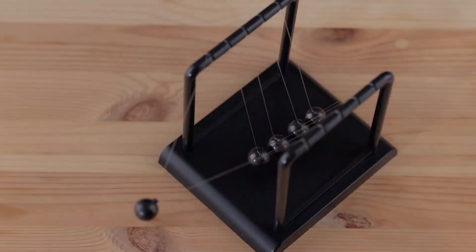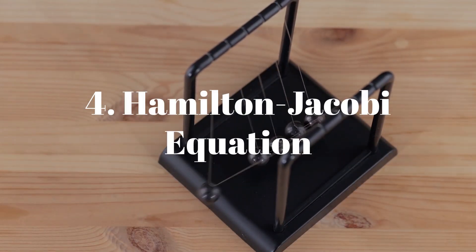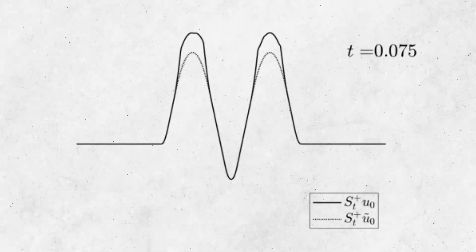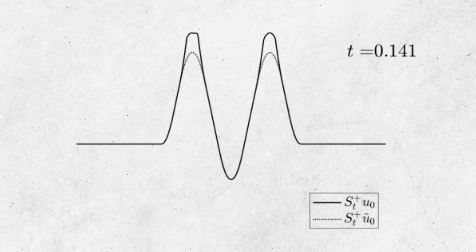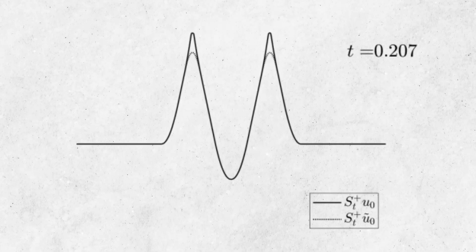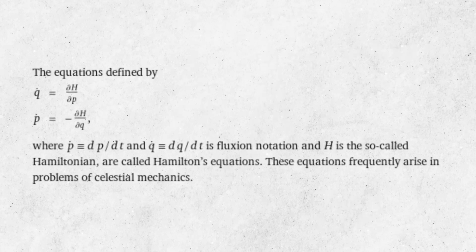In classical mechanics, the Hamilton-Jacobi equation is used to describe the evolution of a physical system over time. This equation is particularly useful for solving problems involving action, which is a measure of the change in a system over time.